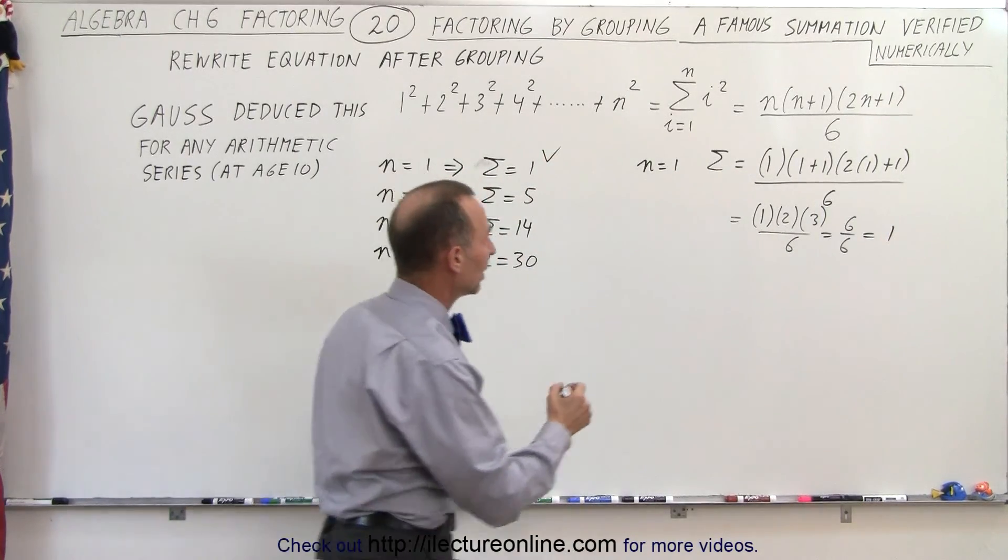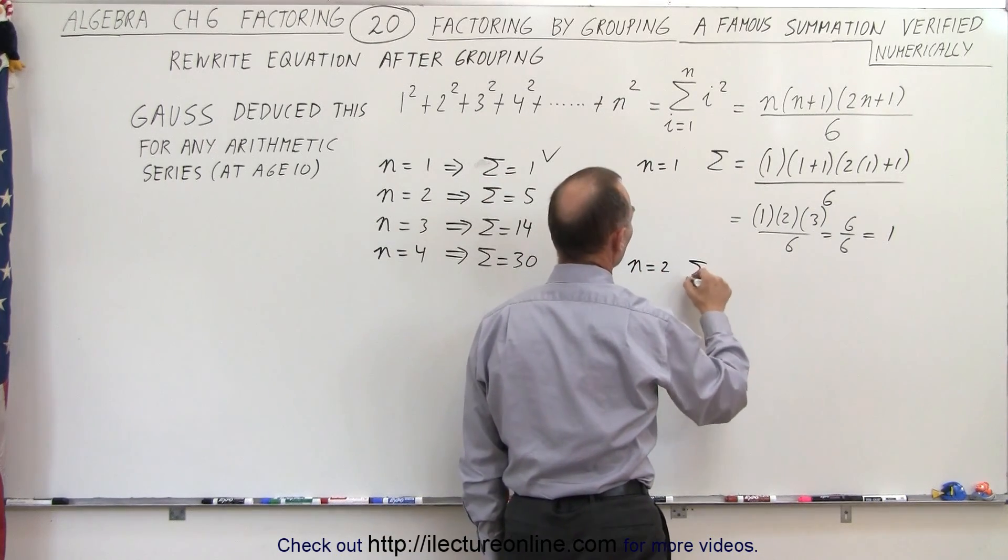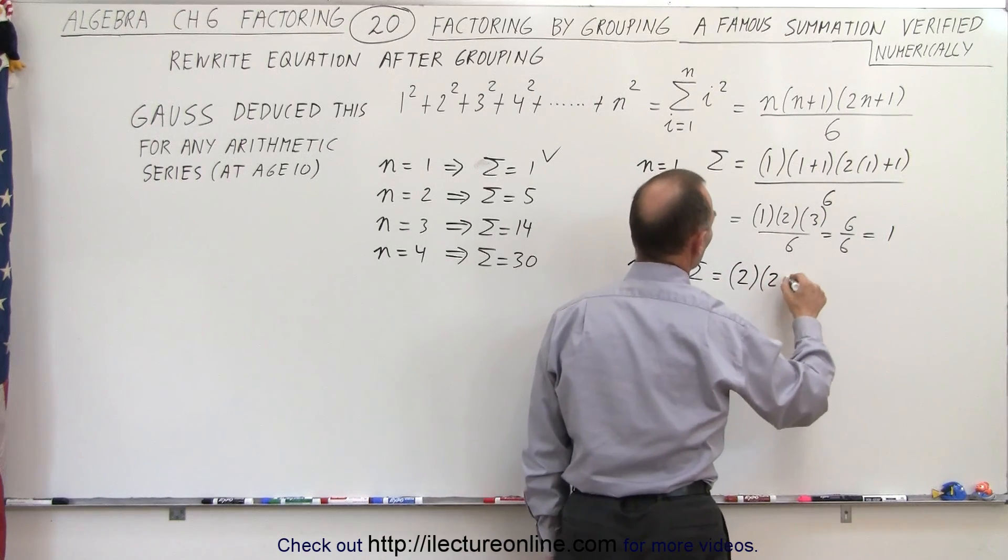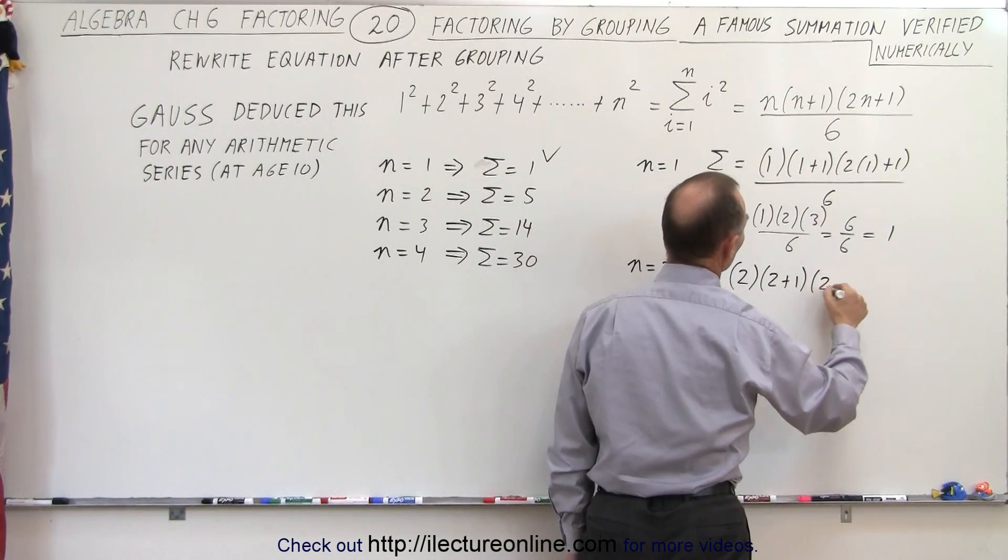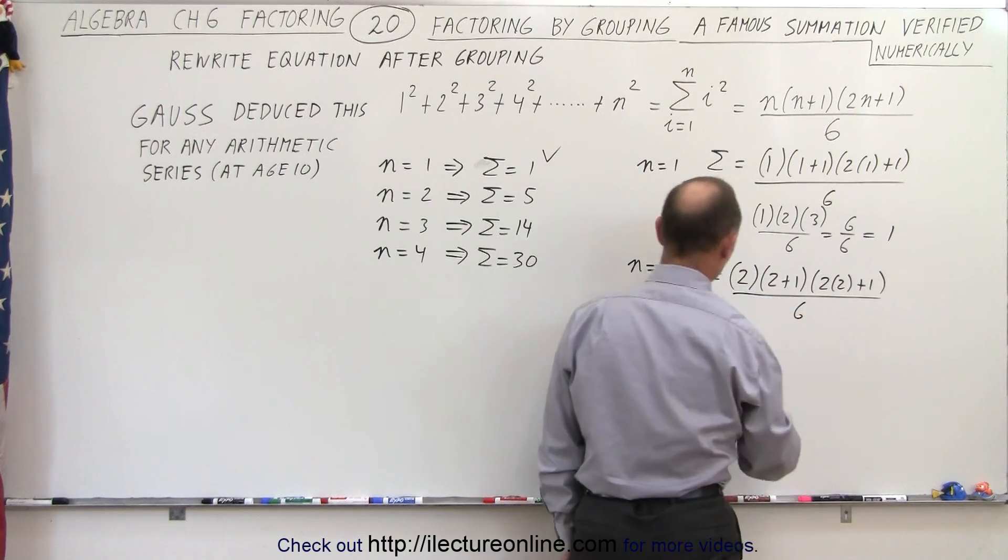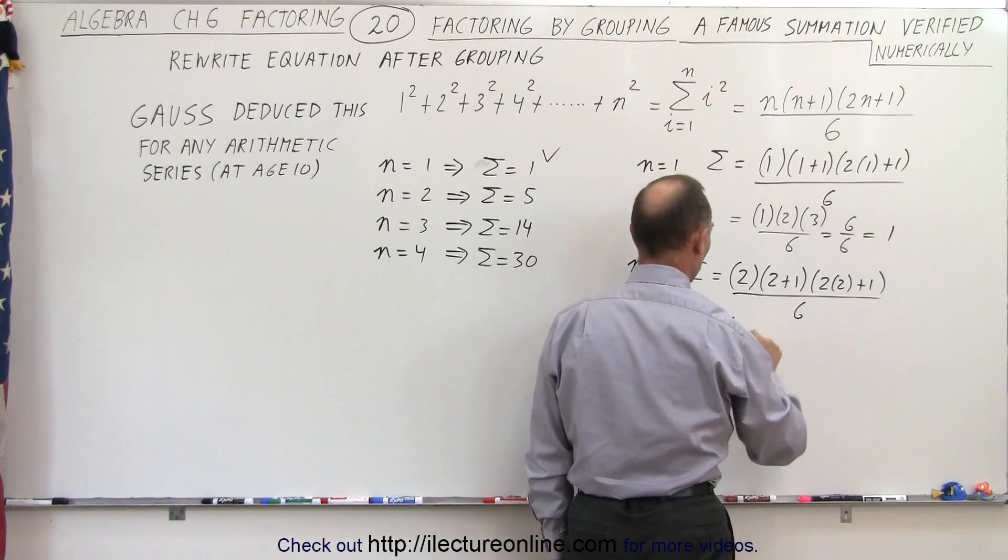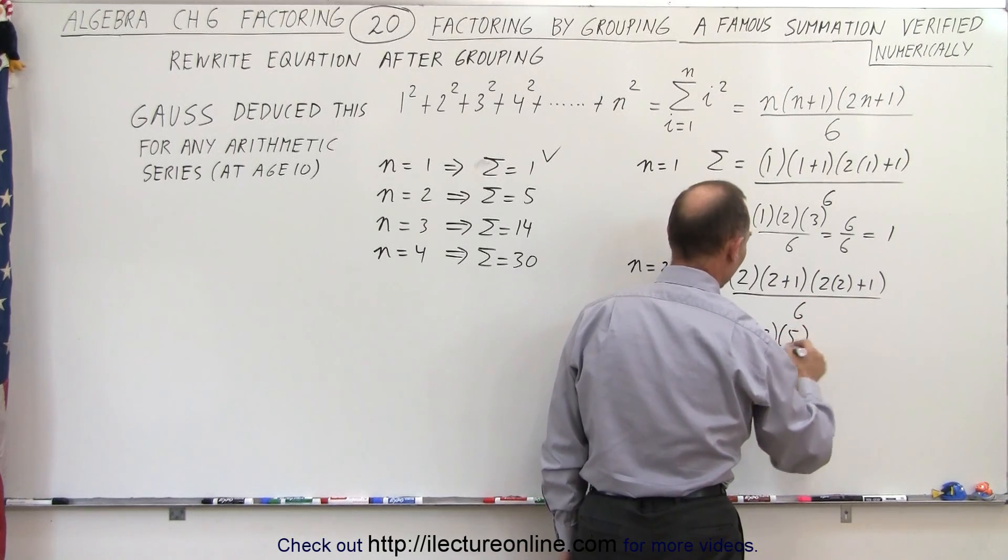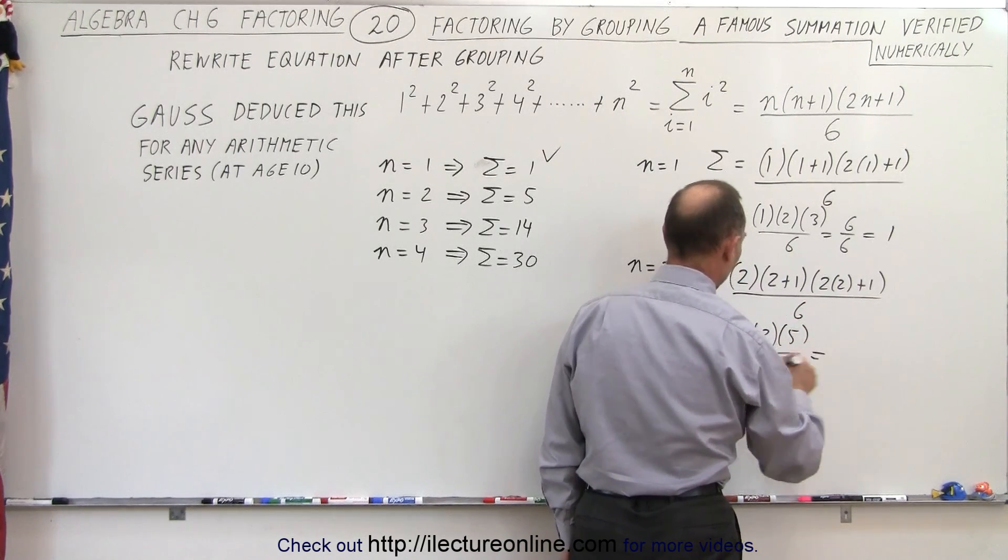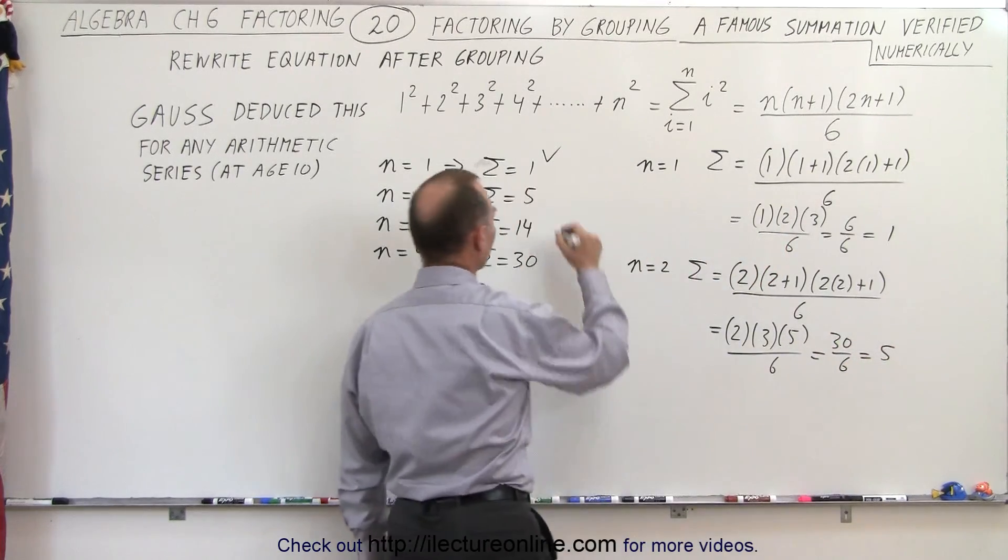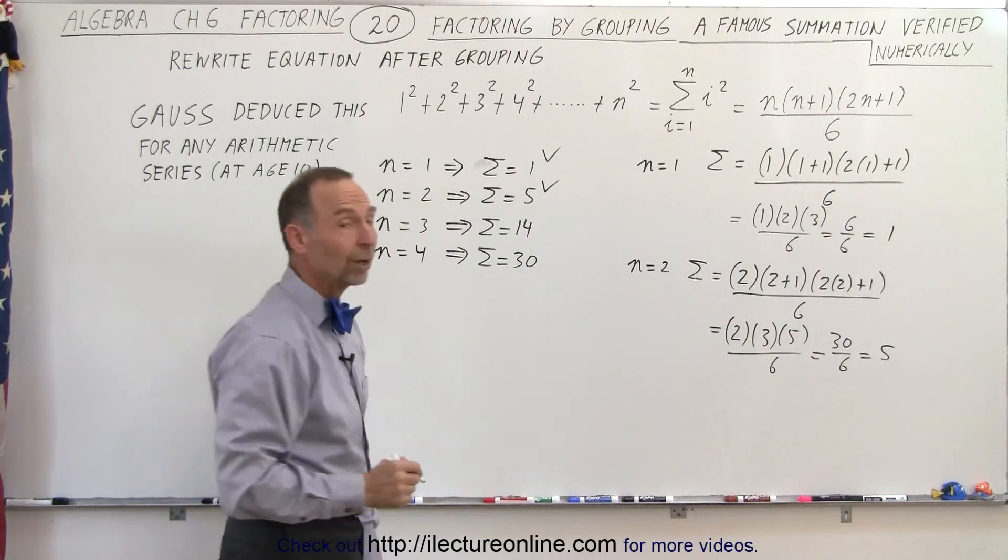Let's try for n equals 2. For n equals 2, the summation therefore equals 2 times (2+1) times (2×2+1) all divided by 6, which equals 2 times 3 times 5 all divided by 6. That would be 6 times 5 which is 30 divided by 6, which equals 5. And sure enough that value works out as well.